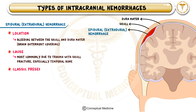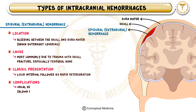A key clinical sign to remember for epidural hemorrhage is the lucid interval. Initially, the patient may lose consciousness due to head trauma, but then regains consciousness and appears normal for a few hours. However, as the bleeding continues, the increasing intracranial pressure (ICP) leads to a sudden and rapid deterioration in mental status. If untreated, the hematoma can cause uncal herniation, which compresses the oculomotor nerve (CN3), resulting in pupillary dilation — a blown pupil — and contralateral weakness.